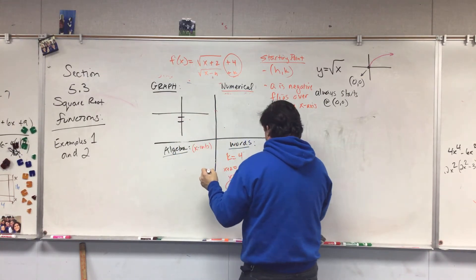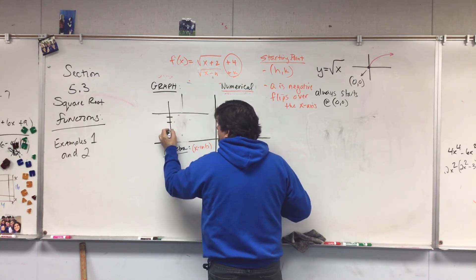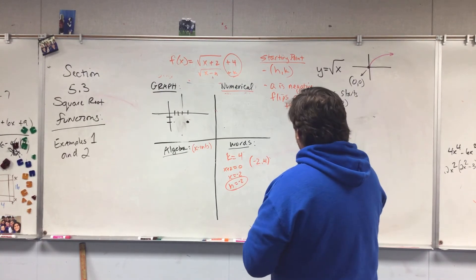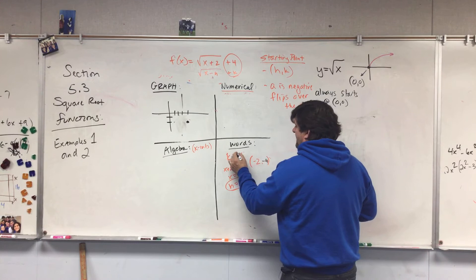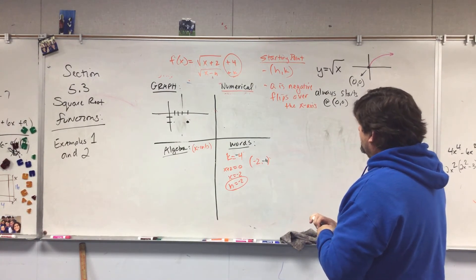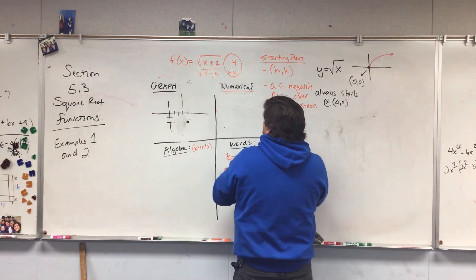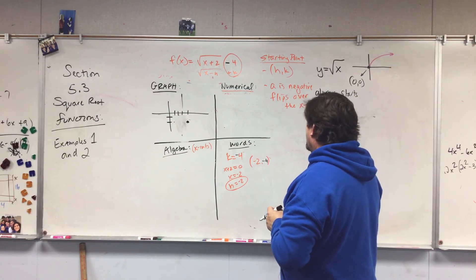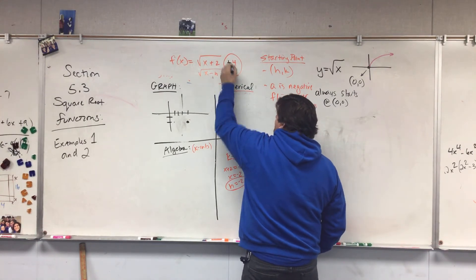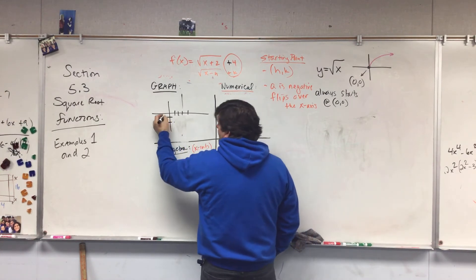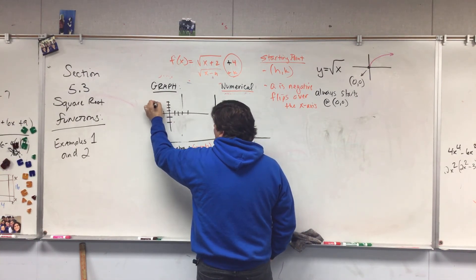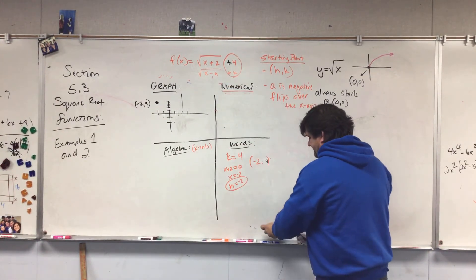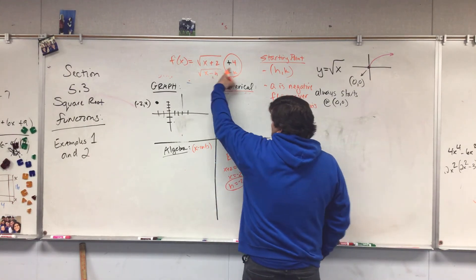Let me go over to my graph. I need to go to negative two and up to four — sorry, I went the wrong way. The starting point is at negative two and four. So our starting point — I don't know why my brain went that direction — is negative two and four. That's correct.